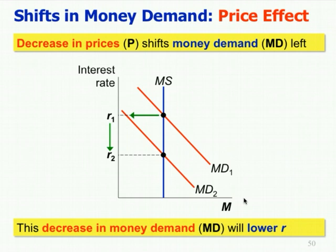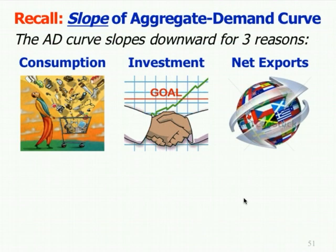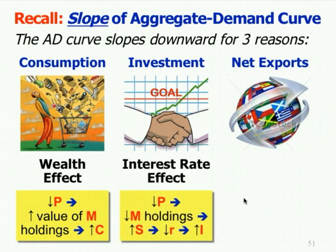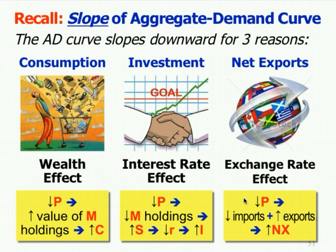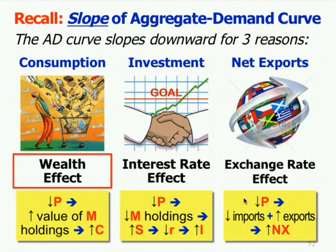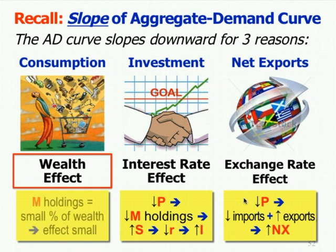Knowing the price effect, we can better explain something discussed before — the slope of the aggregate demand curve. Why does it slope downward? It can't slope downward for the same reasons a demand curve for individual products does, because we can't substitute one product for another — we're talking about overall demand. There are actually three reasons the aggregate demand curve slopes downward: the wealth effect, which affects consumption; the interest rate effect, which affects investment; and the exchange rate effect, which relates to net exports.